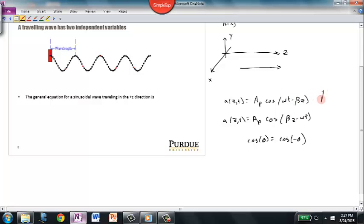In this class, though, we'll tend to write the general formula of a traveling wave as peak times the cosine of omega t minus beta z. And if we wanted to, we could insert that plus minus phi in the end of that there.